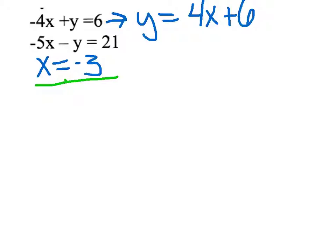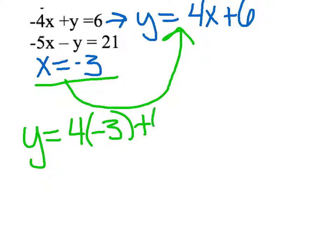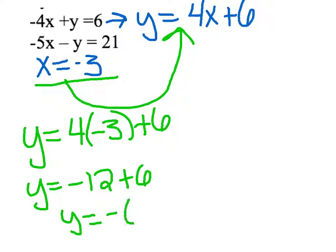Now we want to take that negative 3 and plug it back into our original equation. I'm going to plug it back into y equals 4x plus 6. You could plug it into the negative 4x plus y equals 6. So we will get y equals 4 times negative 3 plus 6. So y will be 4 times negative 3 which is negative 12 plus 6. So y will equal negative 12 plus 6 or negative 6.